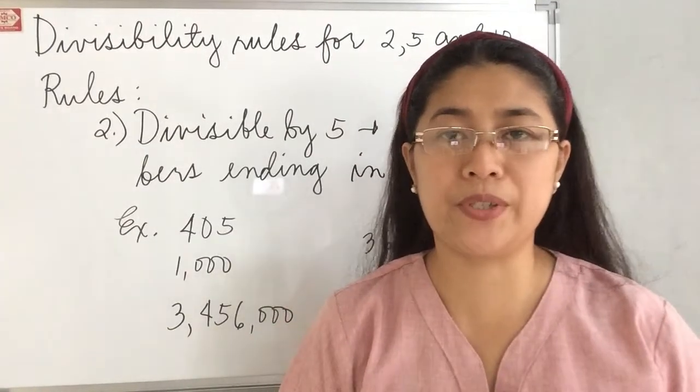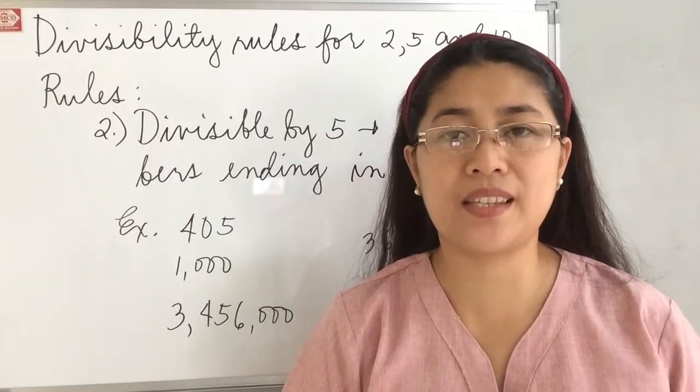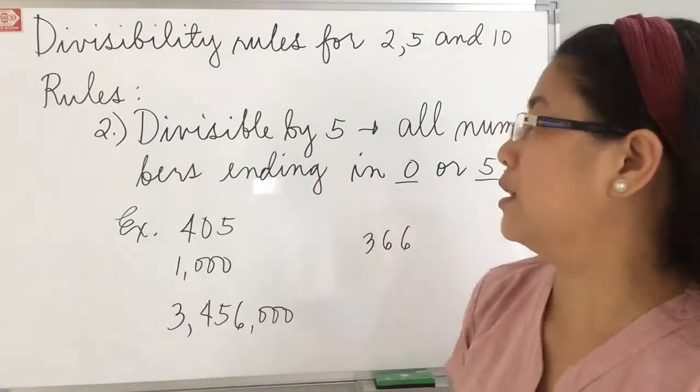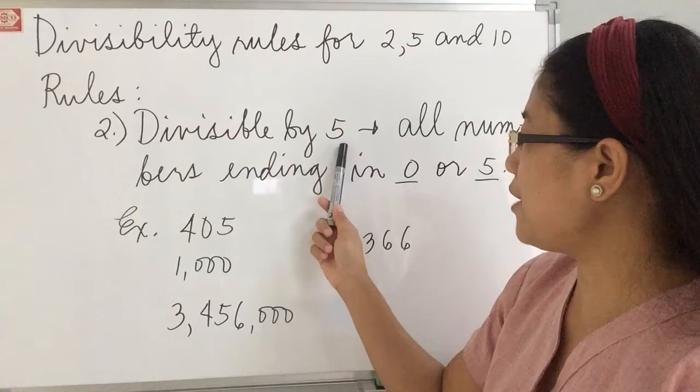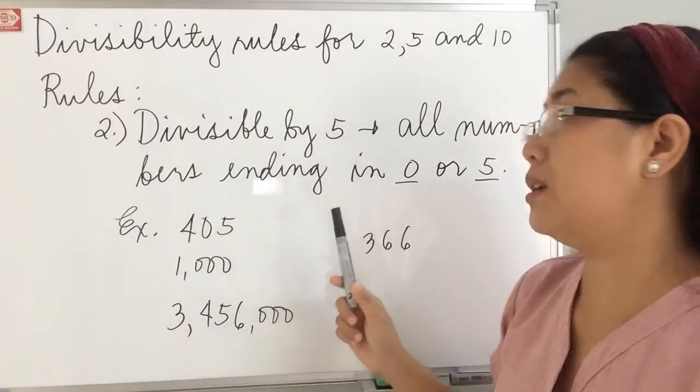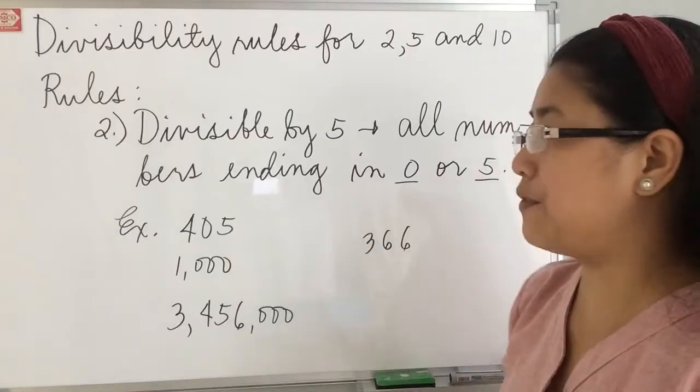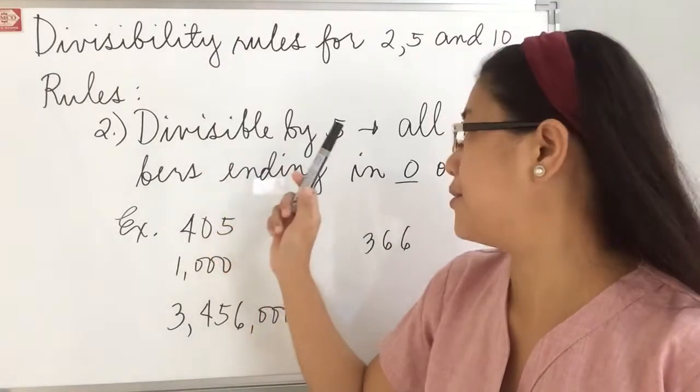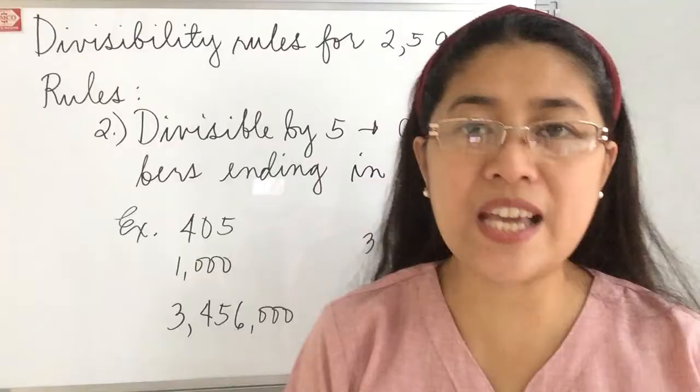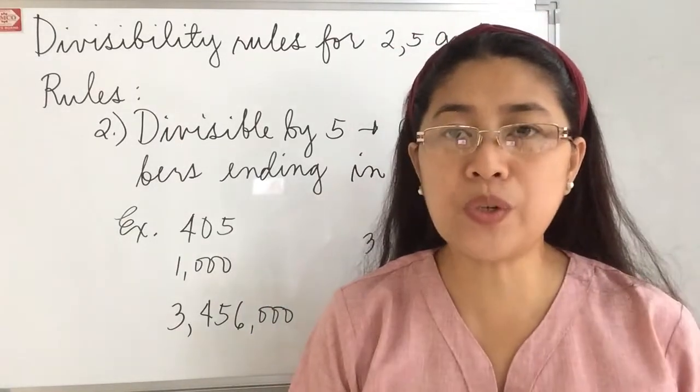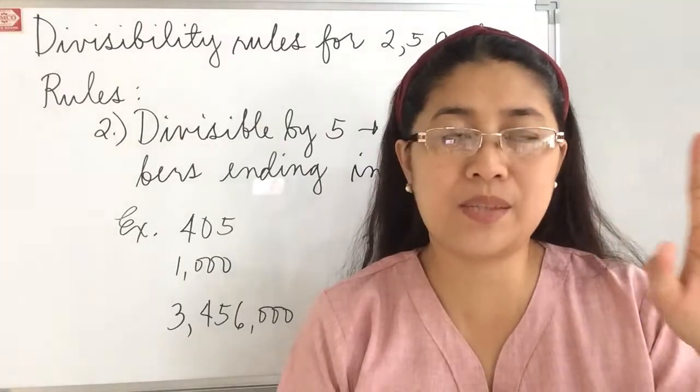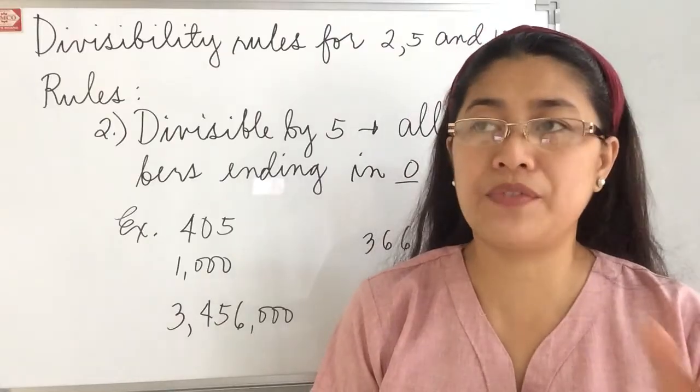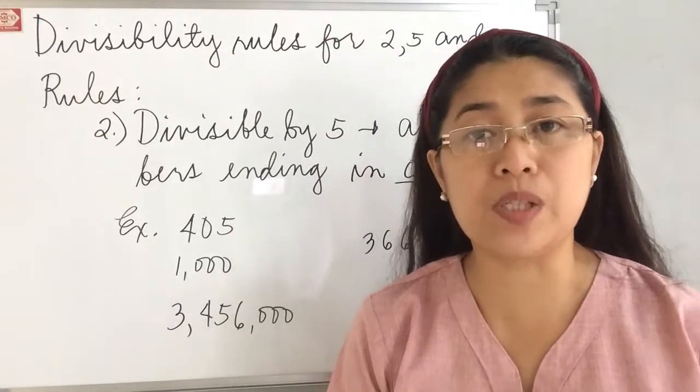Our next rule is for number 5. Now when can we say that a number is divisible by 5? A number is divisible by 5 if that number ends with 0 or 5. Or all numbers ending in 0 or 5 are divisible by 5. So you're just going to think of only two digits, 0 and 5. Just by looking at the one's digit of a certain number, if it's 0 or 5, then therefore it is divisible by 5.